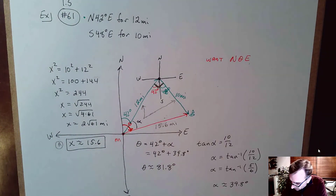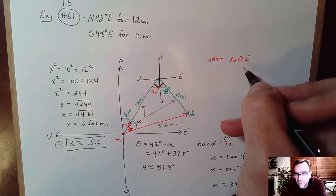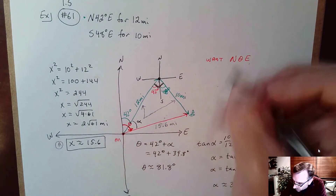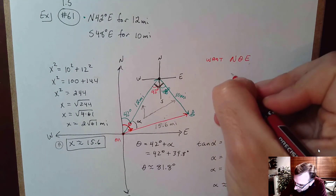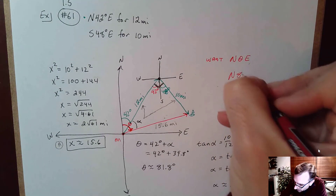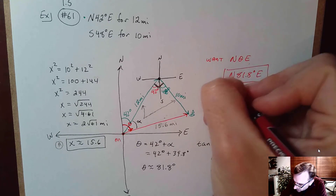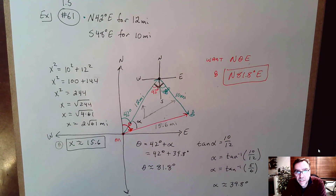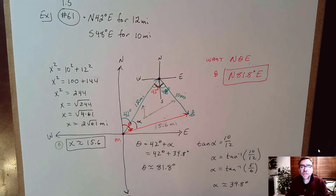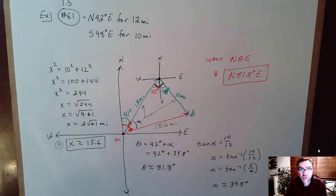Once I know that angle, I can finish off the bearing. The bearing to get to the boat — that red arrow — would be north 81.8 degrees east. So that's the answer for part B, the bearing you'd have to take to catch up to the boat. These problems are tricky and take a lot of practice. The key is drawing a good picture.